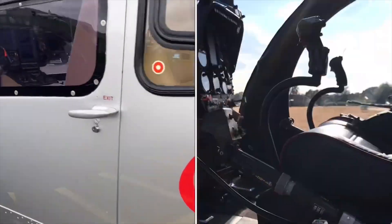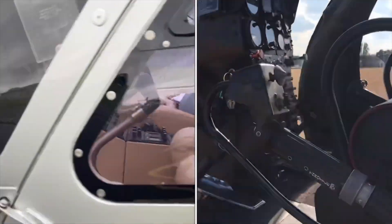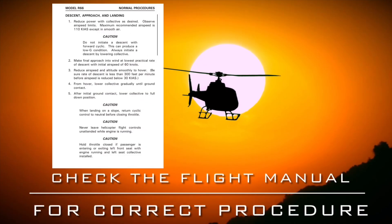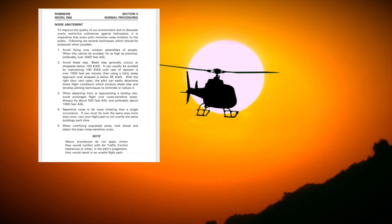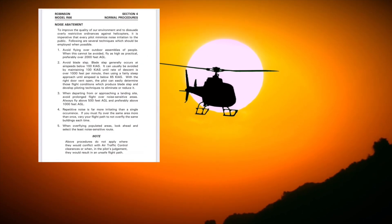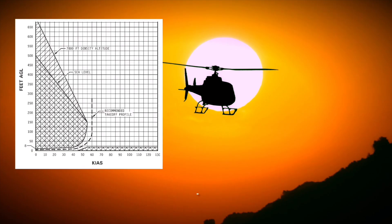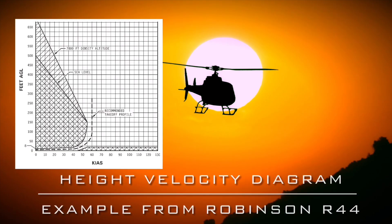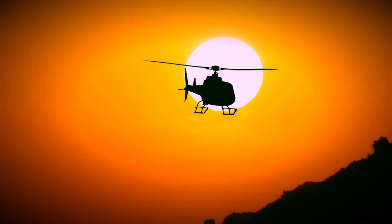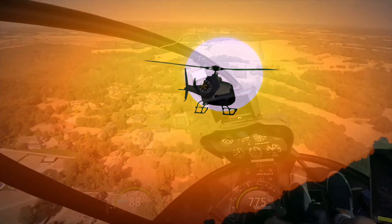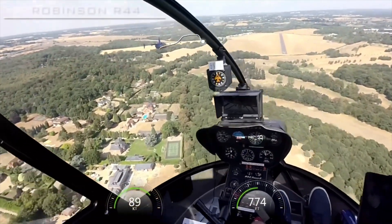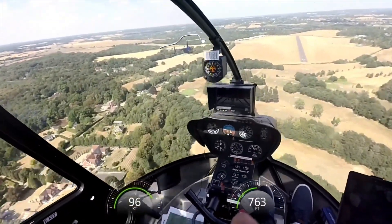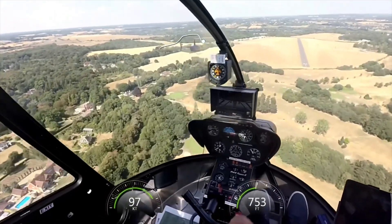The flight manual of each helicopter provides guidance on the approach profiles to fly, but it is important to point out that the height velocity diagram — the dead man's curve — which is used to illustrate where a safe autorotation may and may not be achieved, does not apply to the initial stages of approach and landing. A helicopter can make a shallow, constant angle, or a steep approach to a landing spot depending on the type of obstacles on the approach path.